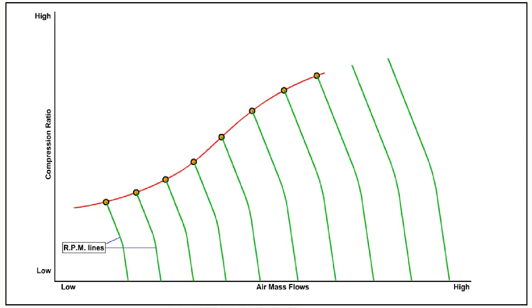A line is drawn which connects points on the graph which equate to the maximum compression ratio and maximum air mass flow at a number of different RPMs. This line is called the surge-stall line.